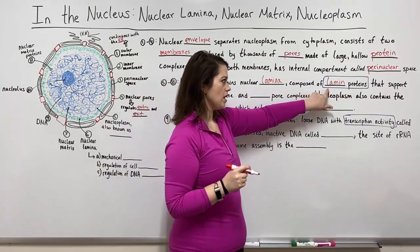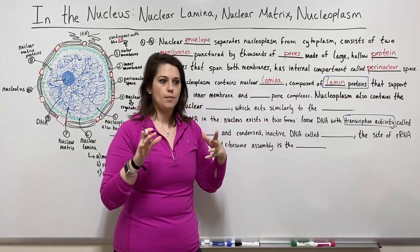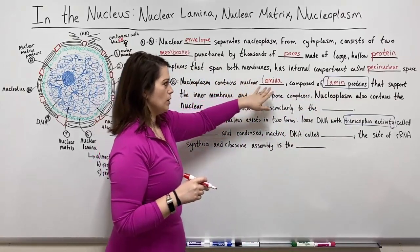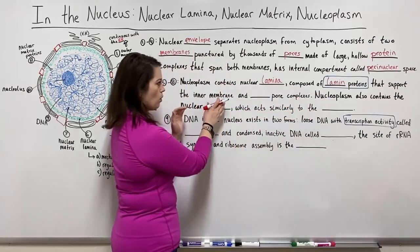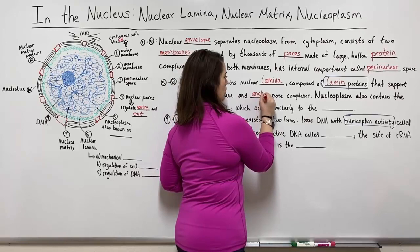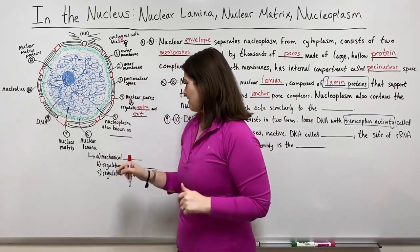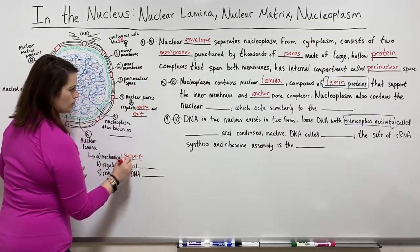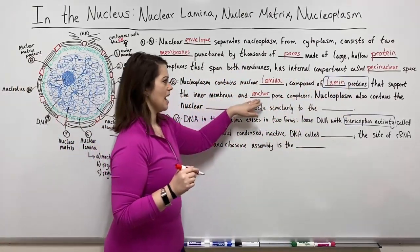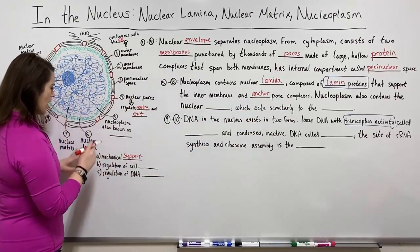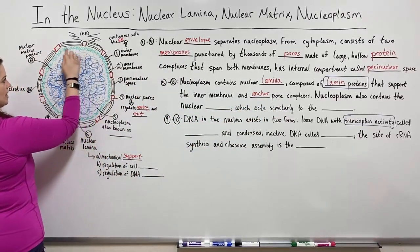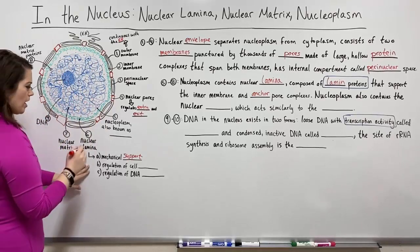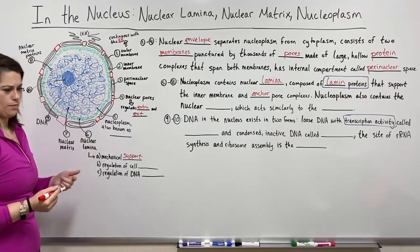The nuclear lamina is composed of lamin proteins that support the inner membrane and anchor the pore complexes. These are the green crisscross fibers drawn going around and supporting that inner membrane. In addition to this mechanical support — supporting the inner membrane and anchoring those nuclear pore complexes — the nuclear lamina also helps to regulate a few very important processes for the cell.